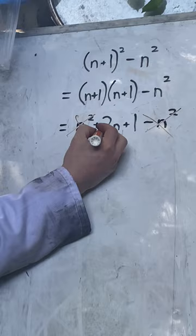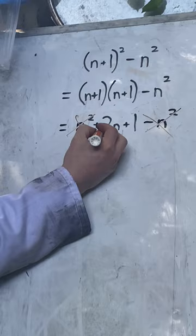Leaving us 2n plus 1 for any value of n we could have chosen. And this, one more than a multiple of 2, is the form that all odd numbers are in.